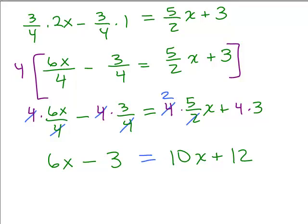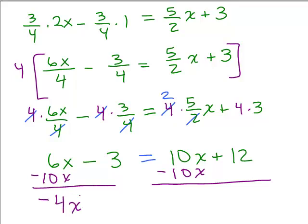You could put the variables on the left or the right-hand side. I'm going to go ahead and put it on the left-hand side, so I'm going to subtract 10x from both sides. And that will give me a negative 4x when I add these. So I also want to get rid of this minus 3 by adding 3 to both sides. So that's going to be 15.